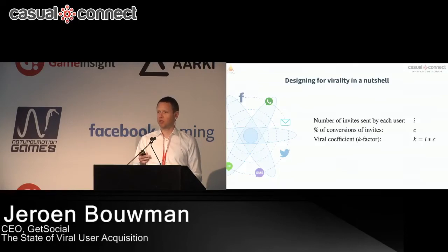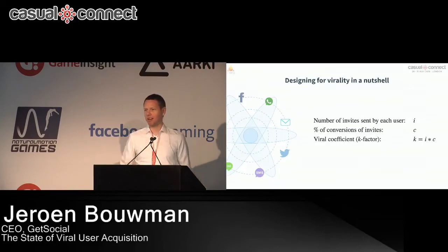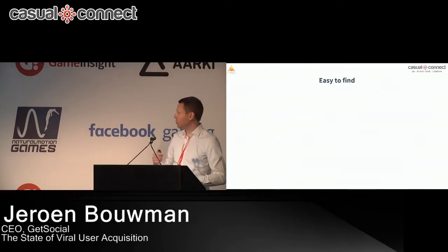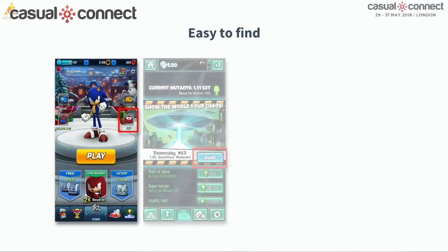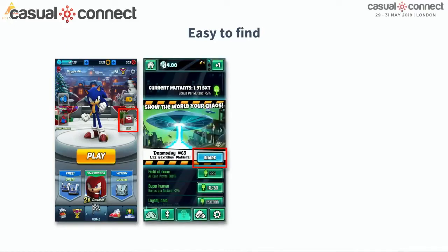You don't have to worry about taking pictures because the presentation will be online later on. So the real basics — and if you want more in-depth, there's the presentation I alluded to earlier. You have to make your mechanic easy to find. Here we have Sonic Speed Forces on the front page — they have the invite button right there in the red square, so it's easy for users to invite their friends. Another great example is Doomsday Clicker by Pickpock — they have multiple ways throughout the game where you can interact with a sharing mechanic.